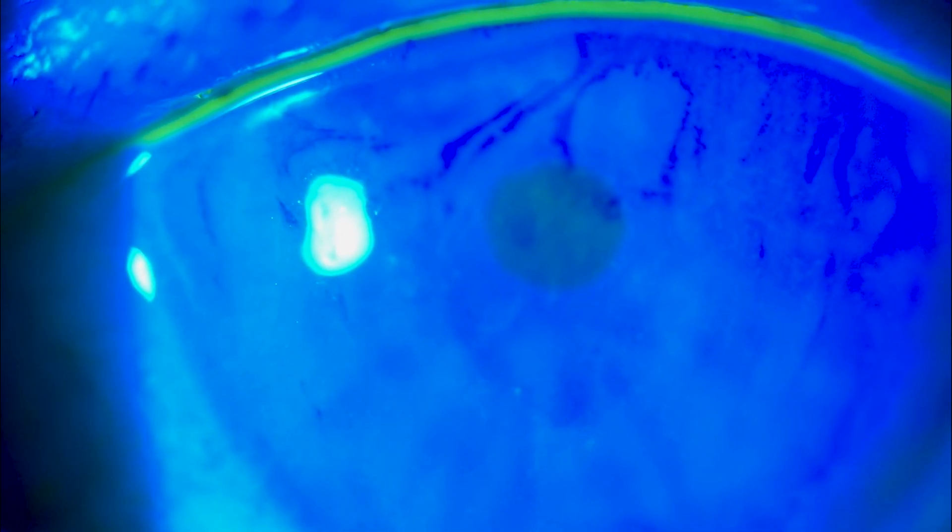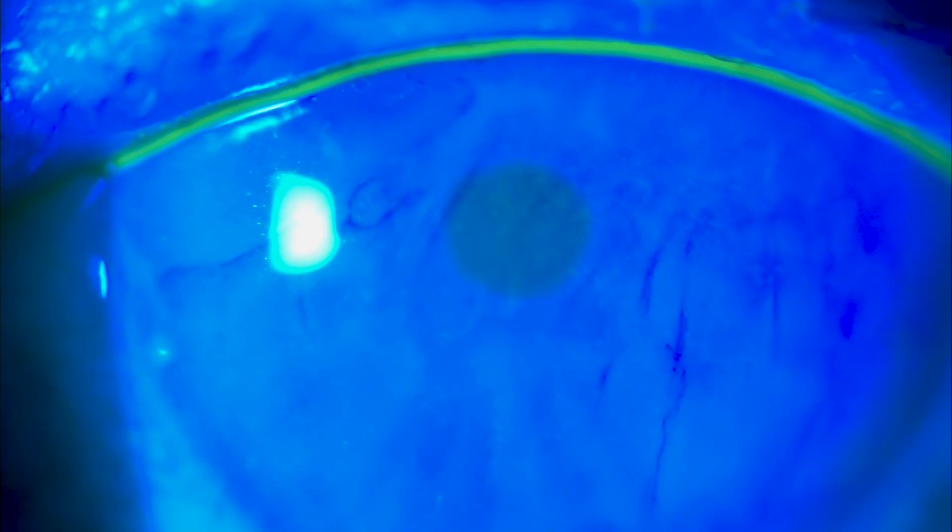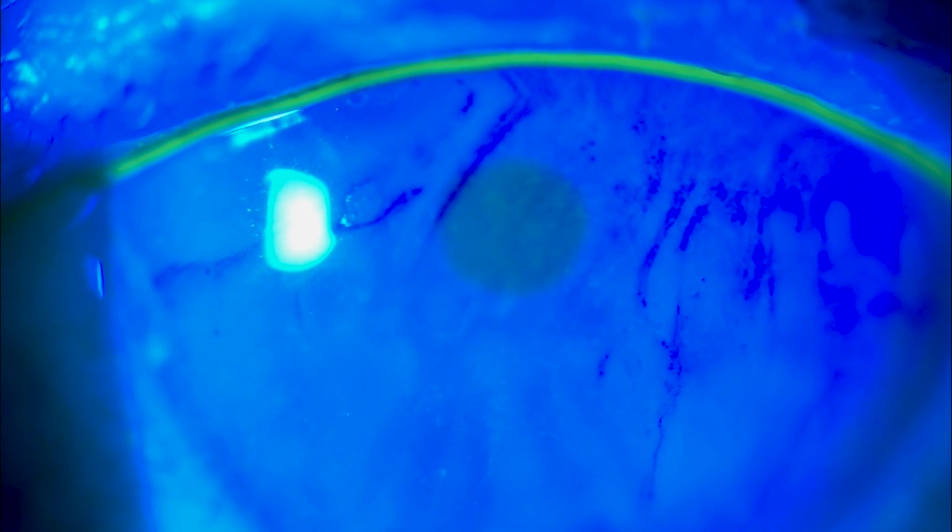Now, in a perfect tear film, when you blink, that tear film should hold for 10 to 15 seconds. In this patient, it's breaking down in 1 to 3 seconds, which is an indicating factor that she is lacking in the oil layer of her tear film.